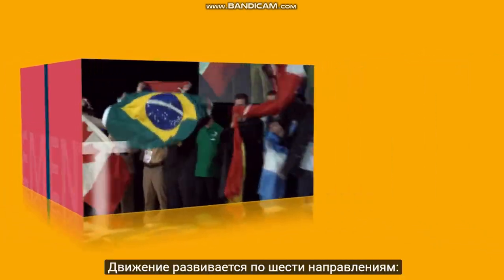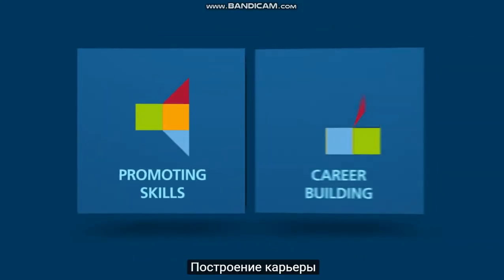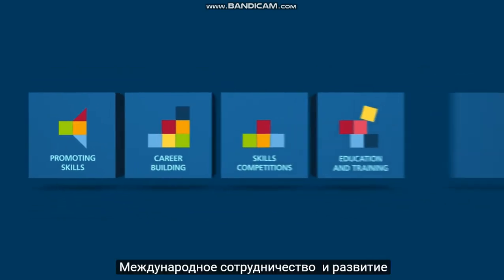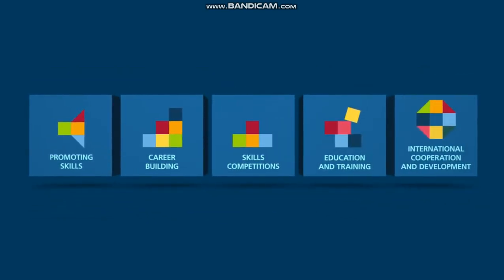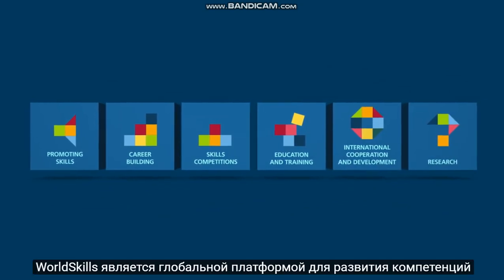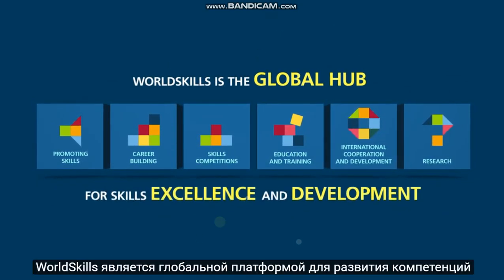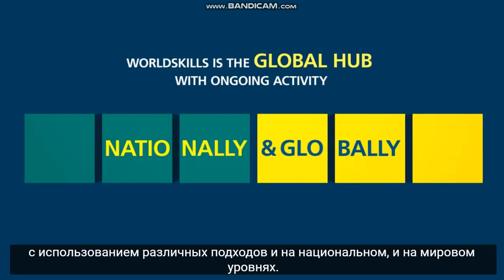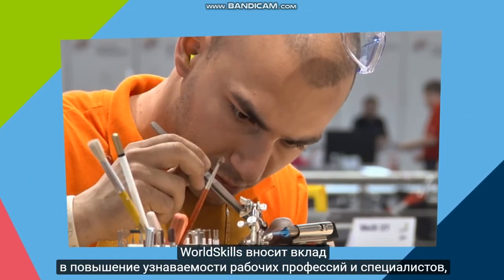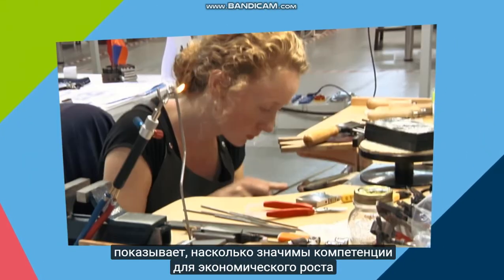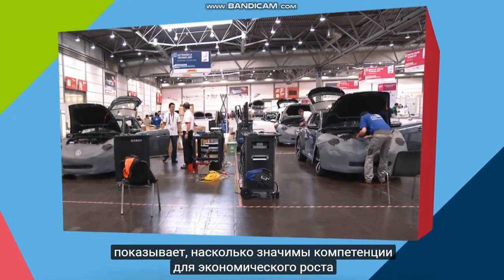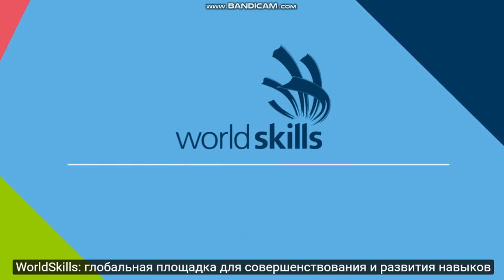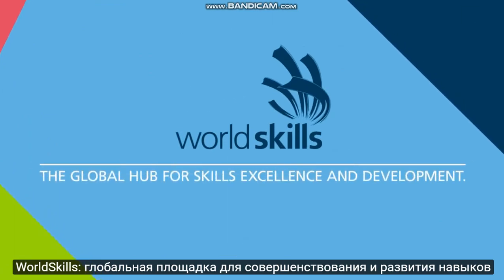By working in the six main areas — promoting skills, career building, skills competitions, education and training, international cooperation and development, and research — World Skills is the global hub for skills excellence and development with ongoing activities nationally and globally. World Skills raises the profile and recognition of skilled people and shows how important skills are in achieving economic growth and personal success. World Skills: the global hub for skills excellence and development.